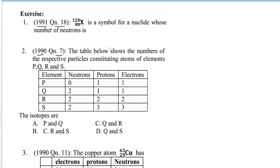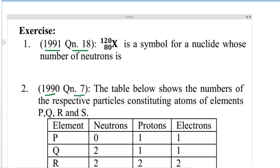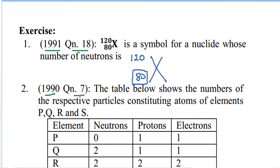Let's get started. We have this symbol X with 120 on top and 80 below — this is a nuclide symbol. The number 80 is the atomic number, and we know the atomic number is the same as the number of protons, so we have 80 protons.